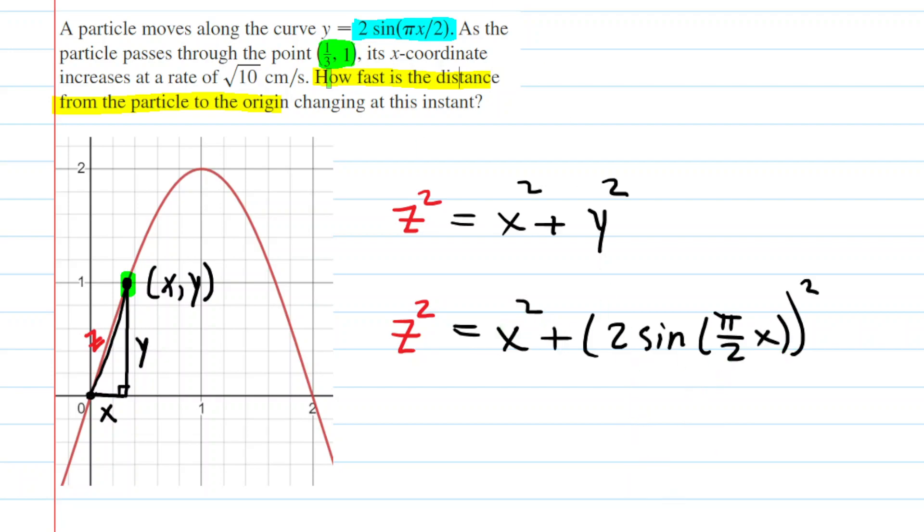So we notice from the trigonometric equation that the y-coordinate can be substituted with the expression 2 sin(π/2 x). Don't forget to square that.